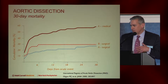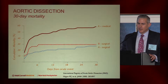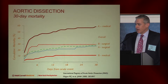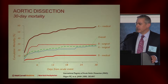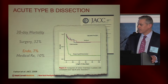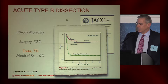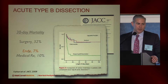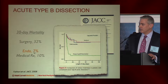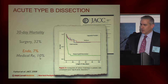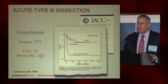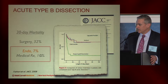Type B dissection is kind of the opposite. With surgical therapy in all comers — most of these are complicated type B dissections — mortality is 30% at 30 days. Medical therapy looks to be superior for type B dissections, particularly in uncomplicated patients. Overall, the 30-day mortality with type B dissection is 32% in the early IRAD data. Medical therapy was down at 10%, but there was an interesting small group who underwent endovascular therapy, presumably for complications, who had mortality similar to the medically treated patients — raising the question early on whether there would be benefit to treating type B dissections with endovascular interventions.